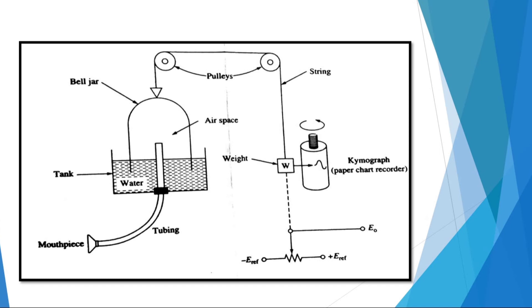The change in bell pressure changes the volume inside the bell which also causes the position of the counterweight to change. We may record the volume changes on a piece of graph paper by attaching a pen to the counterweight or tension string.